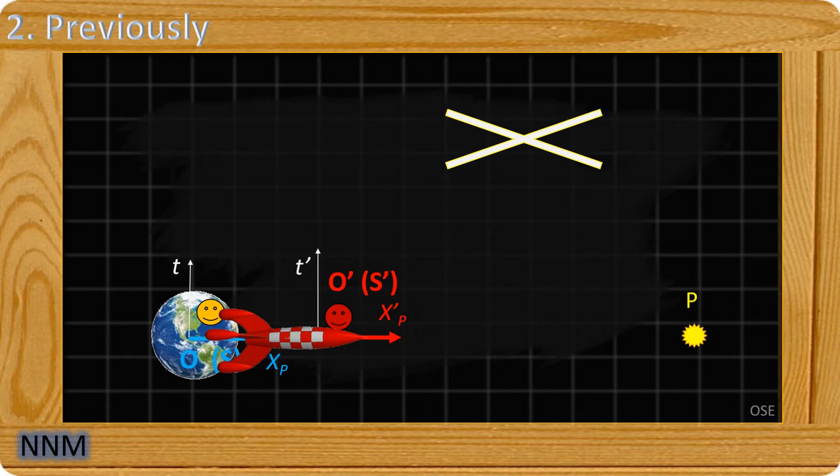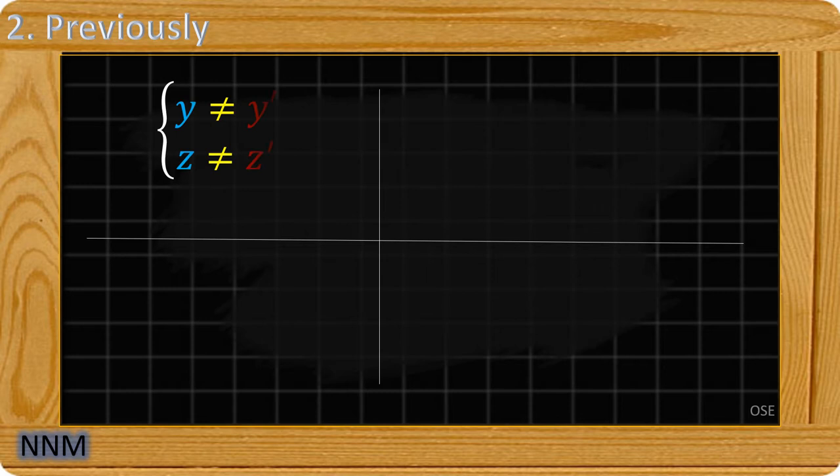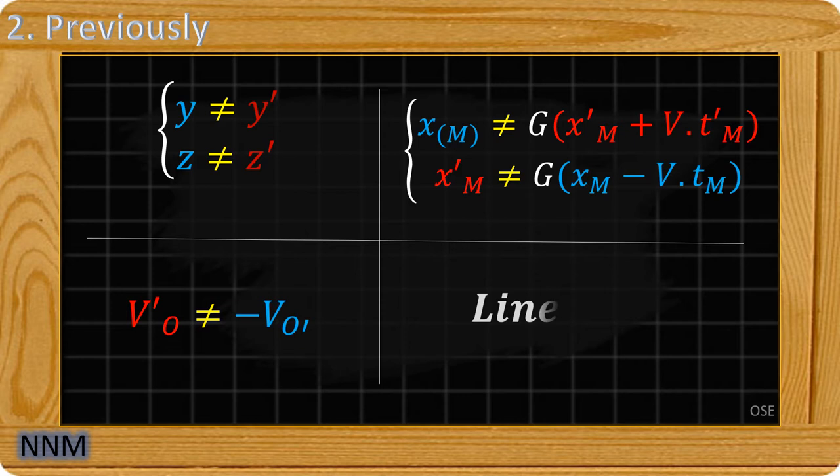In the usual demonstrations, Y' is equal to Y, there is a link between X' and X, V' equals minus V, and all these equations should be linear. During our analyses, we were unable to establish these assertions.